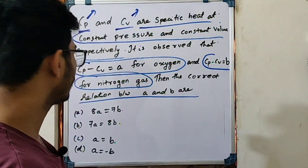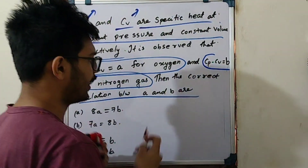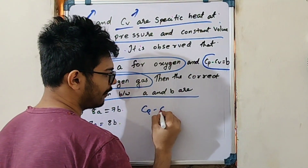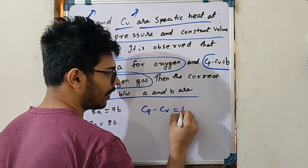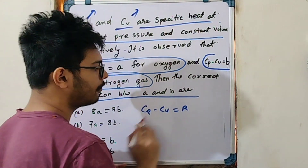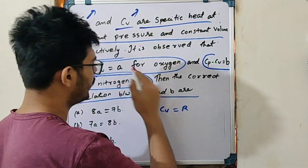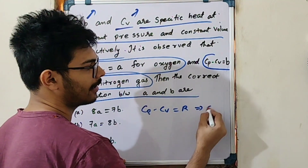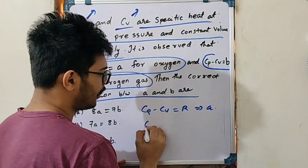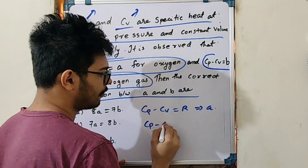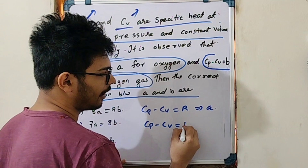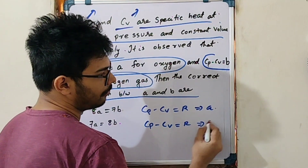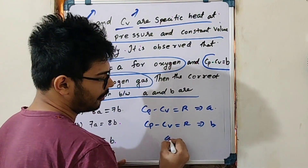The correct relation uses CP minus CV equal to R. For oxygen, CP minus CV equals R equals A. For nitrogen, CP minus CV equals R equals B. Therefore A is equal to B — but we need to check this more carefully using molecular masses.